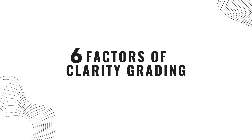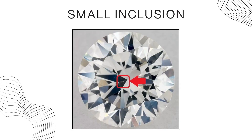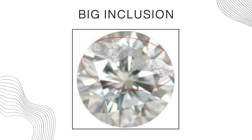The six factors start with size — specifically, the size of the inclusion. All of these clarity grades are based upon the inclusion present inside a stone, so the size of the inclusion matters hugely in giving a proper clarity grade to a diamond.